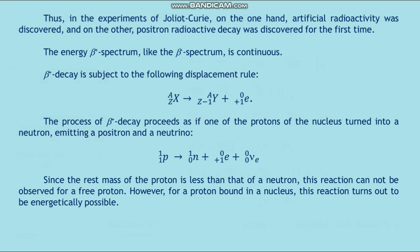The energy spectrum of beta-plus, like the beta-minus spectrum, is continuous. Beta-plus decay is subject to the following displacement rule. The process of beta-plus decay proceeds as if one of the protons of the nucleus turns into a neutron, emitting a positron and a neutrino. Since the rest mass of the proton is less than that of the neutron, this reaction cannot occur for a free proton, but for a proton bound in a nucleus it is energetically possible.